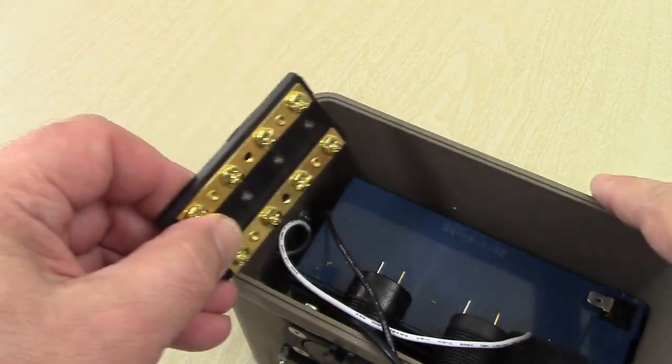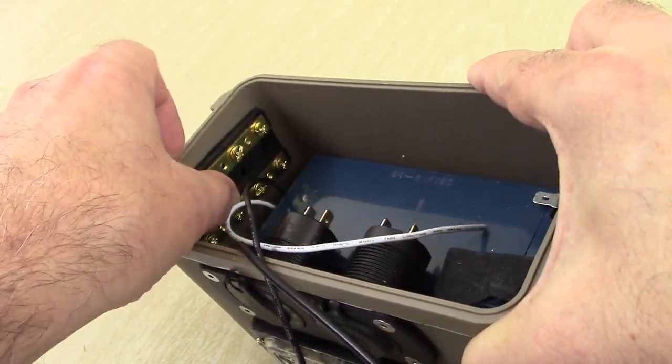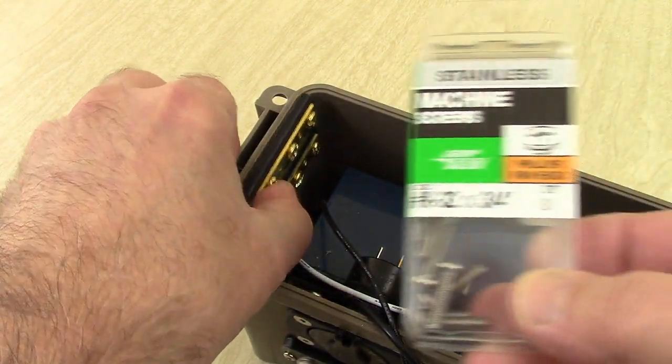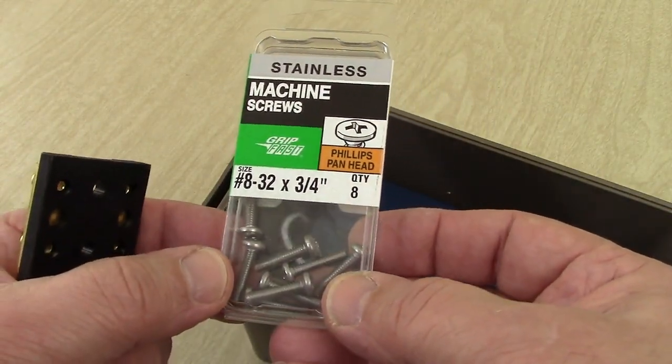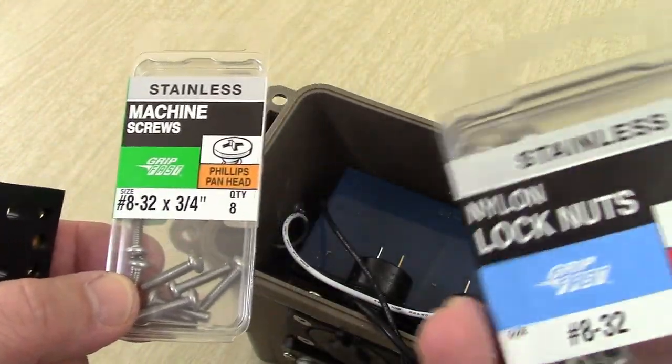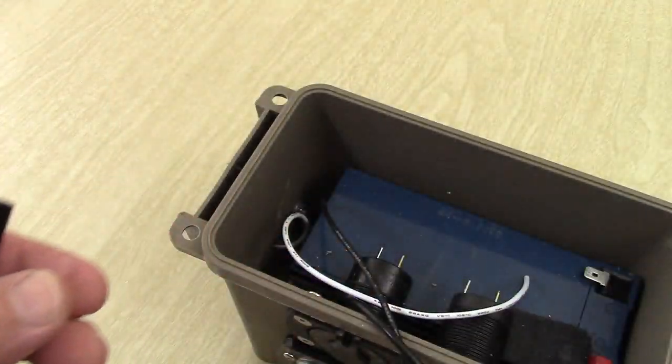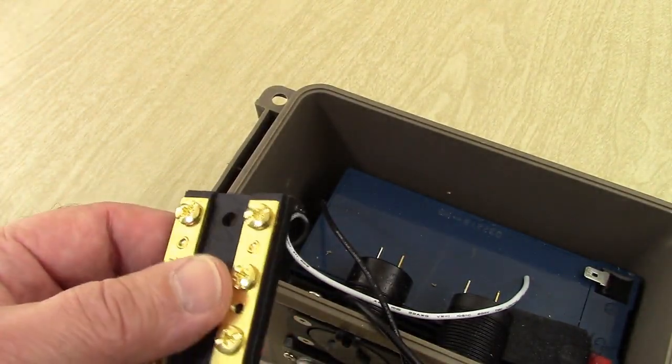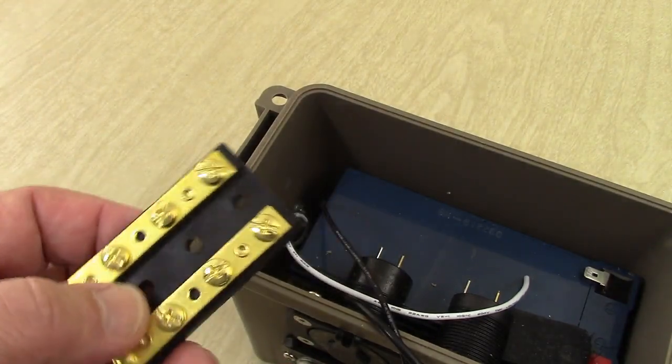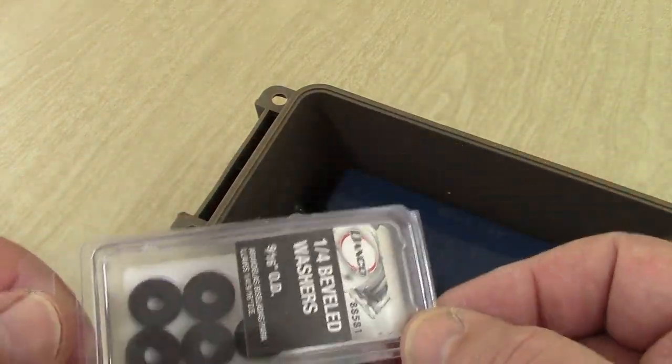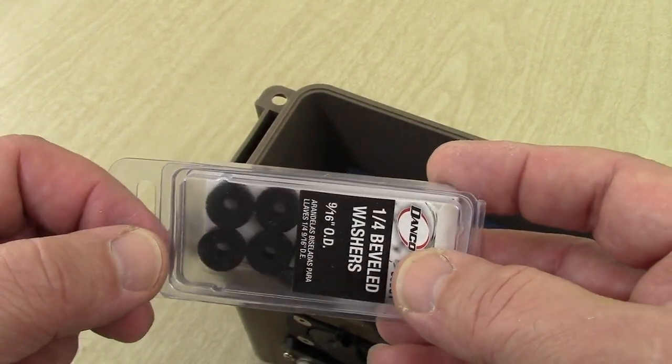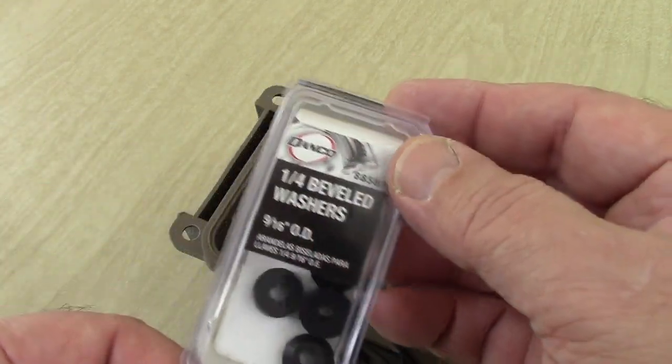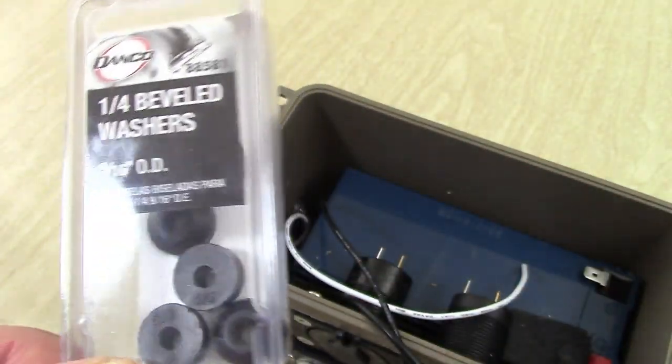So this is going to go inside here right like this and I am going to use these 8-32nds machine screws. I'm going to use nylon lock nuts and they're also 8-32nd, by the way. And what else am I going to use?